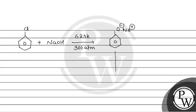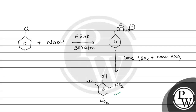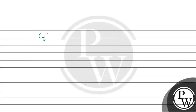Now, what do we do next? We react sodium phenoxide with concentrated HNO₃. The product formed will have an OH group and three NO₂ groups — NO₂ here, NO₂ here, and NO₂ again. So if we look at this structure: carbon = 6, hydrogen = 3, oxygen = 7, and nitrogen = 3. So the molecular formula becomes C₆H₃O₇N₃.